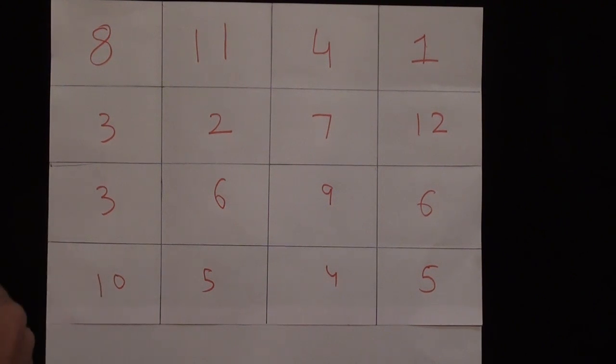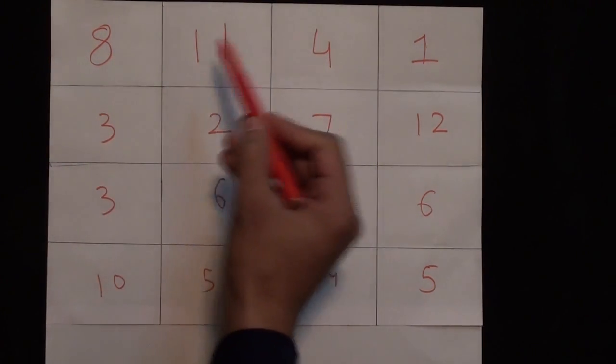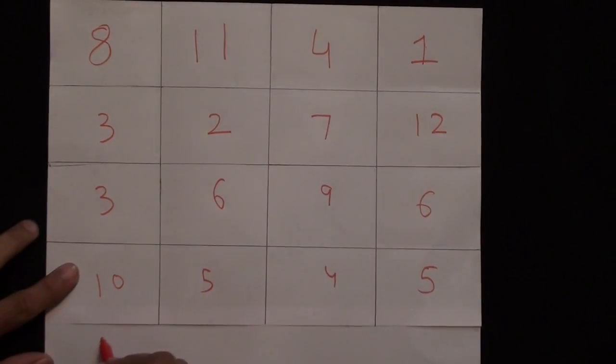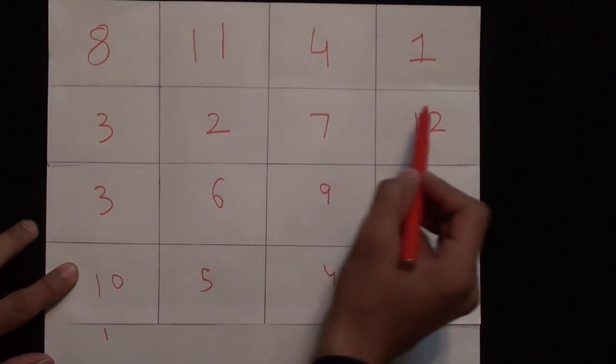I would like you to add 8 plus 11 plus 4 plus 1, so we get 24, that's the selected number. 3 plus 2 plus 7 plus 12 also equals 24.